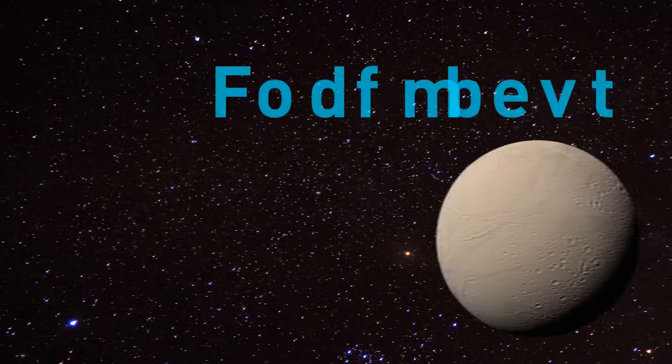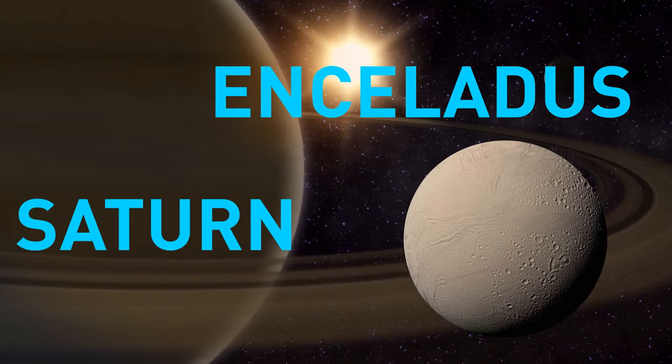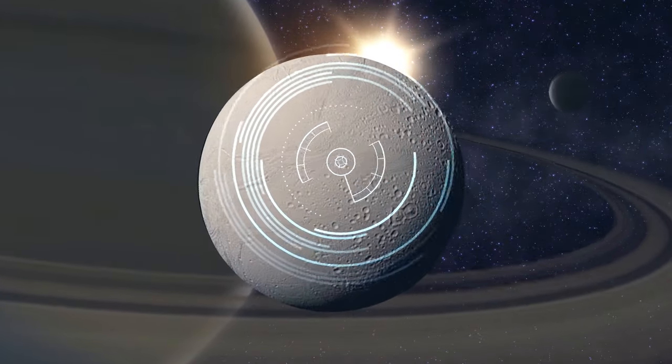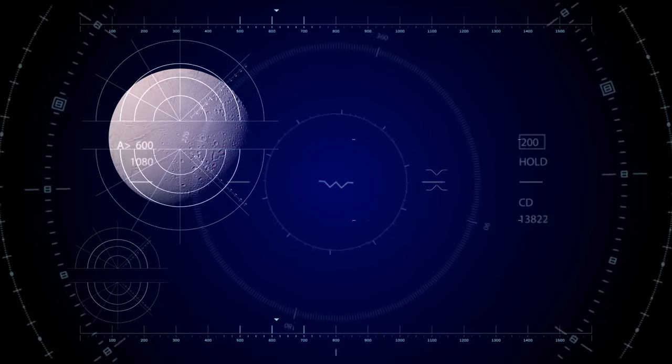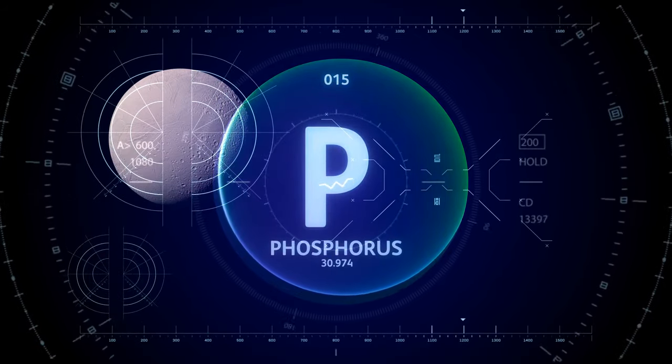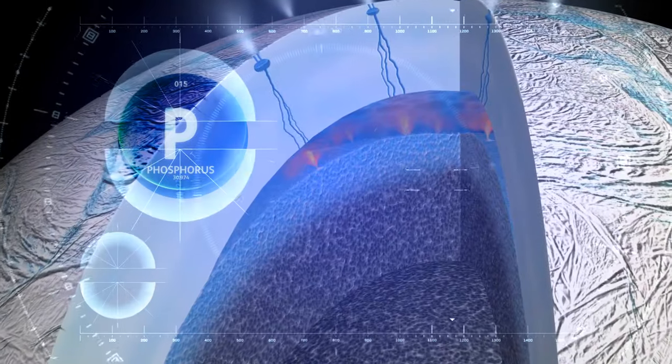Consider now Enceladus, Saturn's icy moon, one of the most promising places to look for life outside Earth. Scientists have just detected the last one of the six necessary ingredients for its formation – phosphorus. This rarest element has been discovered in an ocean on Enceladus.